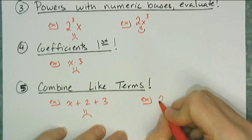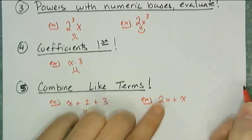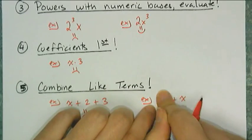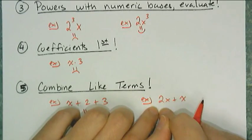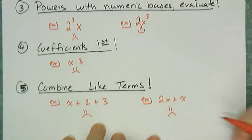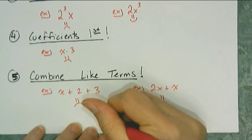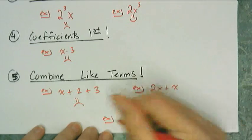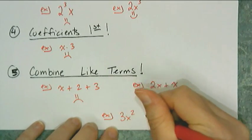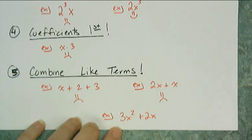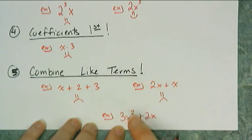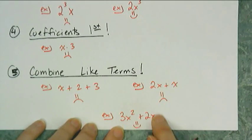Another example is 2x + x. While I have two x's and another x, this is not the simplified form. The simplified form would be 3x, so that's also a frowny face. But 3x² + 2x is indeed simplified, because I can't combine squared terms and non-squared terms.